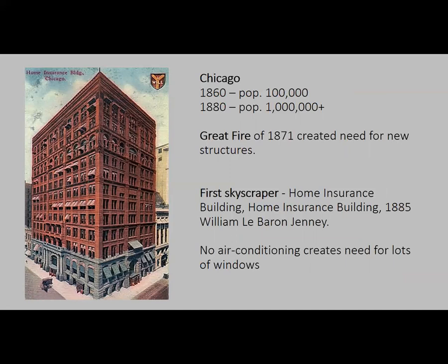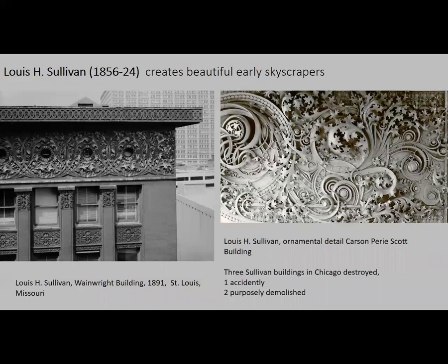The first skyscraper was a pretty plain building. But then Louis H. Sullivan comes along — he's kind of sick of plain buildings — and starts making incredibly beautiful early skyscrapers with filigree, stonework, and highly ornate designs. Sadly, because these are amazing-looking buildings, three of Sullivan's buildings in Chicago were destroyed in recent times — one accidentally and two purposely demolished, which is pretty awful.